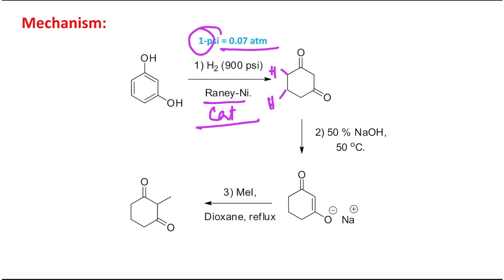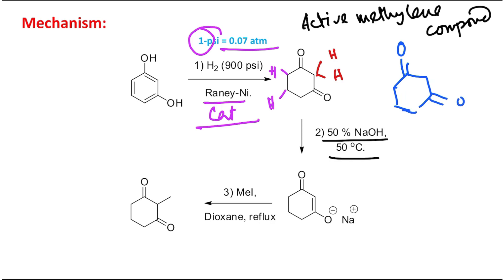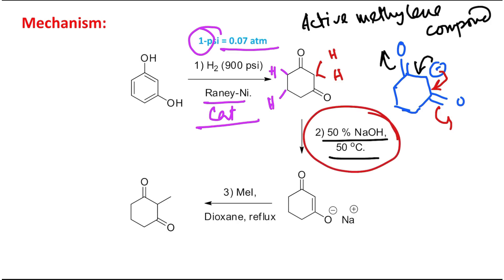The next step is reaction with 50% sodium hydroxide at 50°C. If you look at the intermediate, it is a 1,3-dicarbonyl compound, also called an active methylene compound. I have discussed a dedicated lecture on this too. The two protons on the active methylene are significantly acidic because after deprotonation the conjugate base is doubly stabilized - it is conjugated with both carbonyl groups. The pKa is close to 10, so under 50% NaOH at 50°C, deprotonation readily occurs.